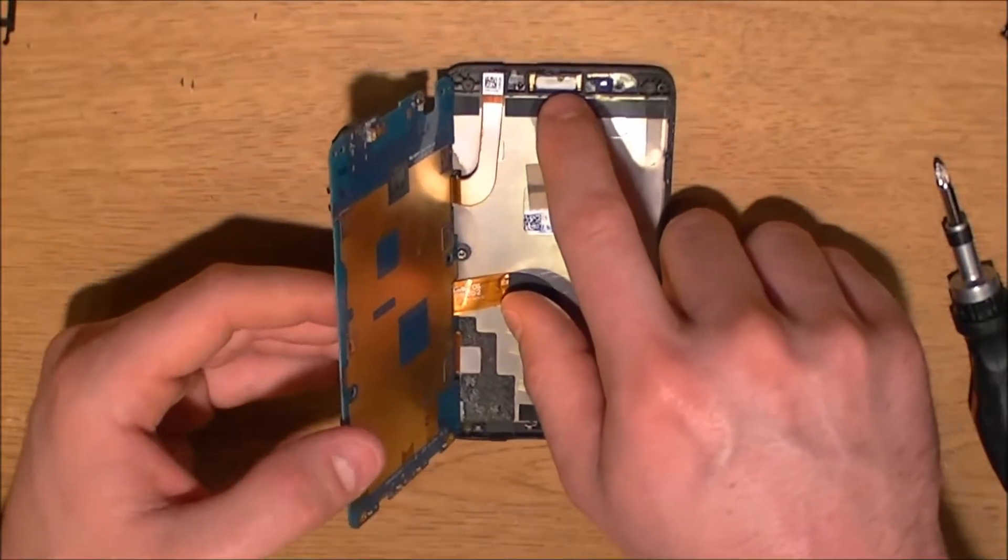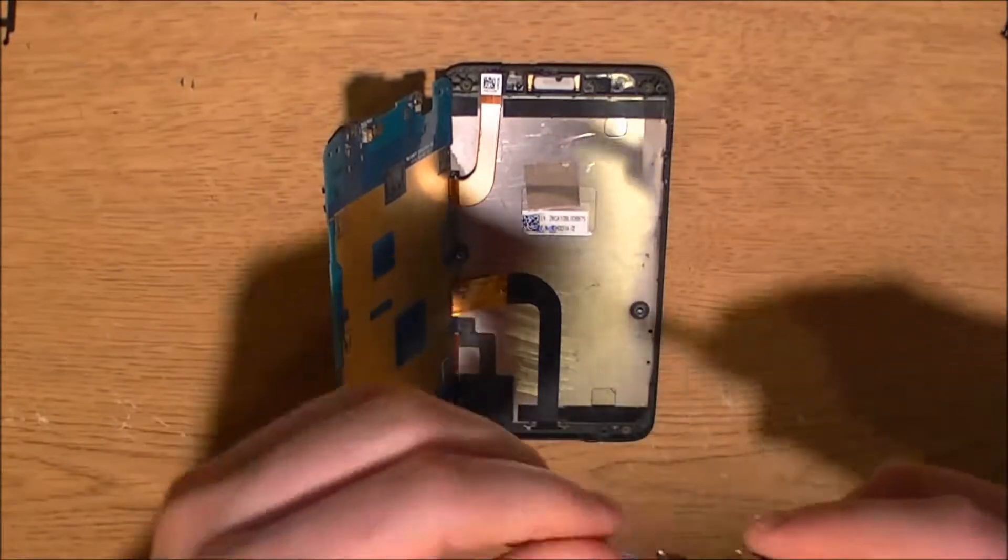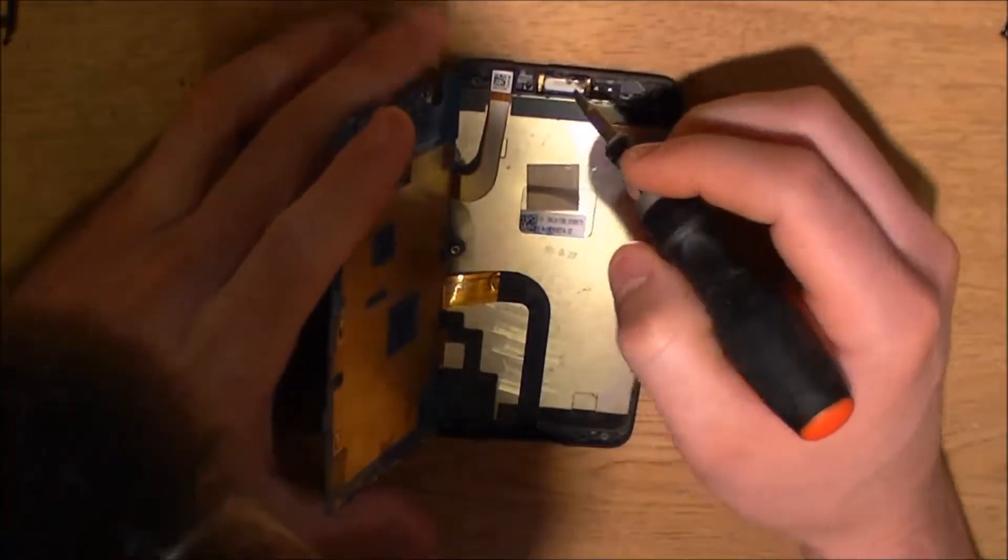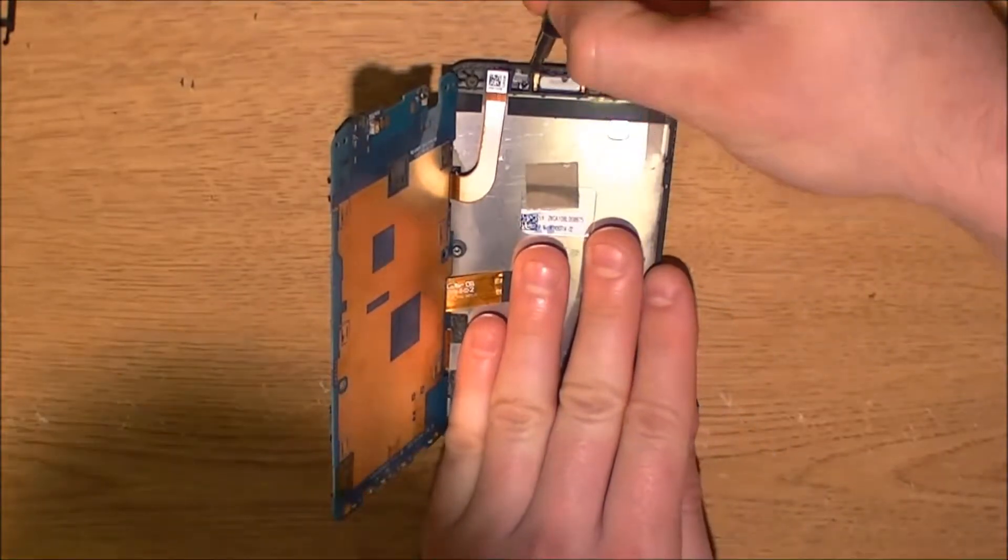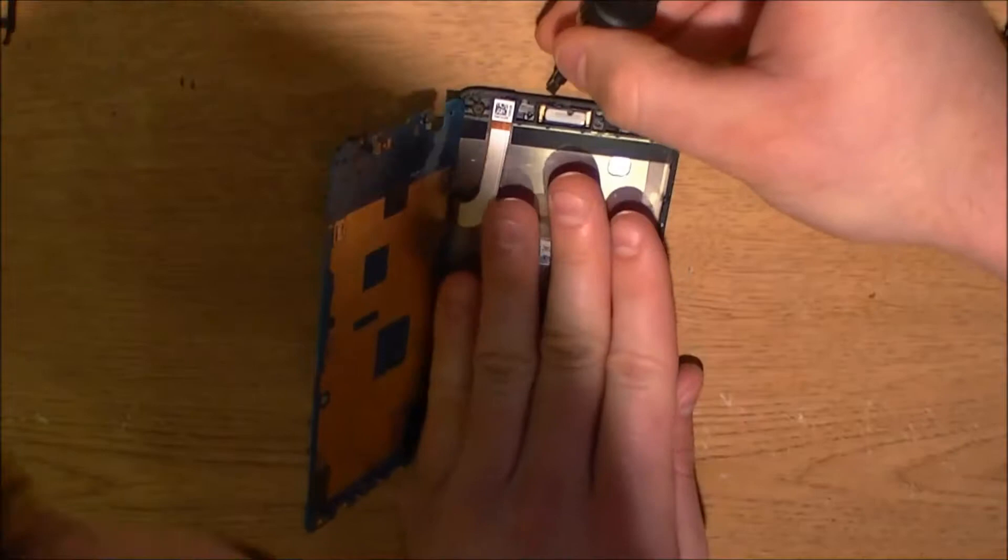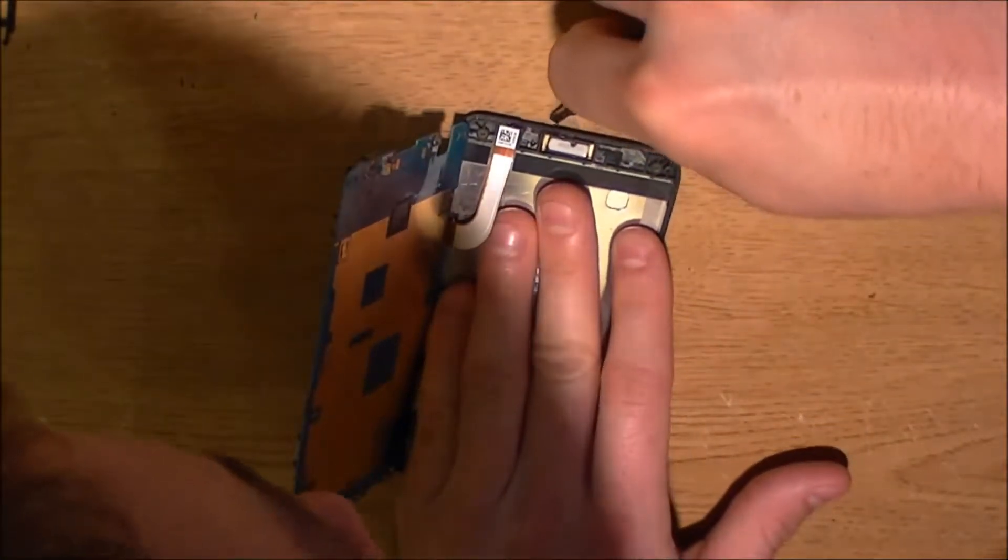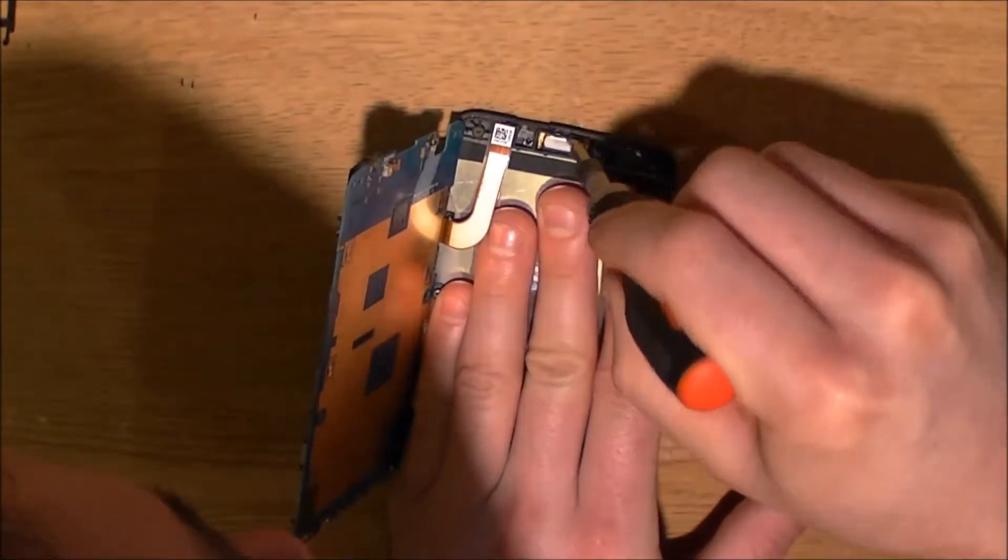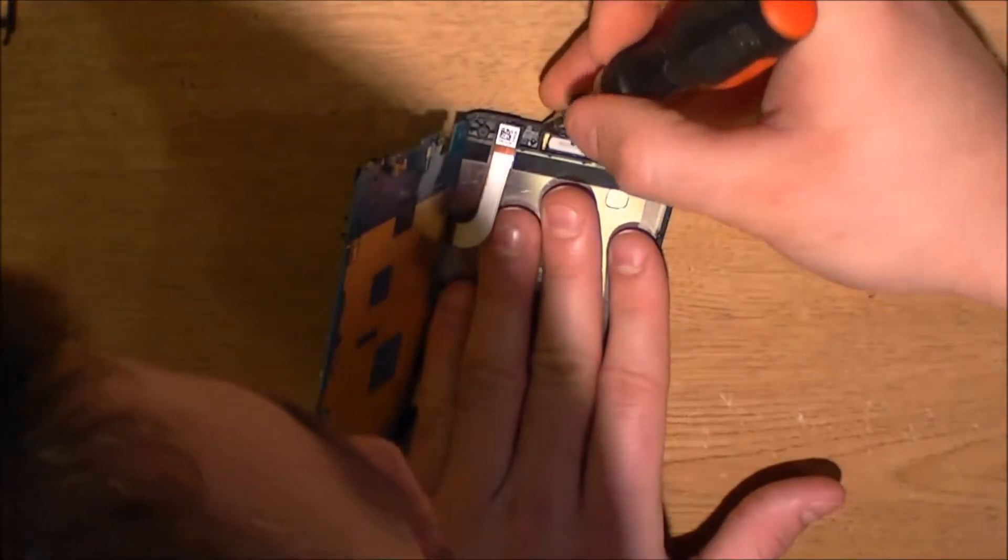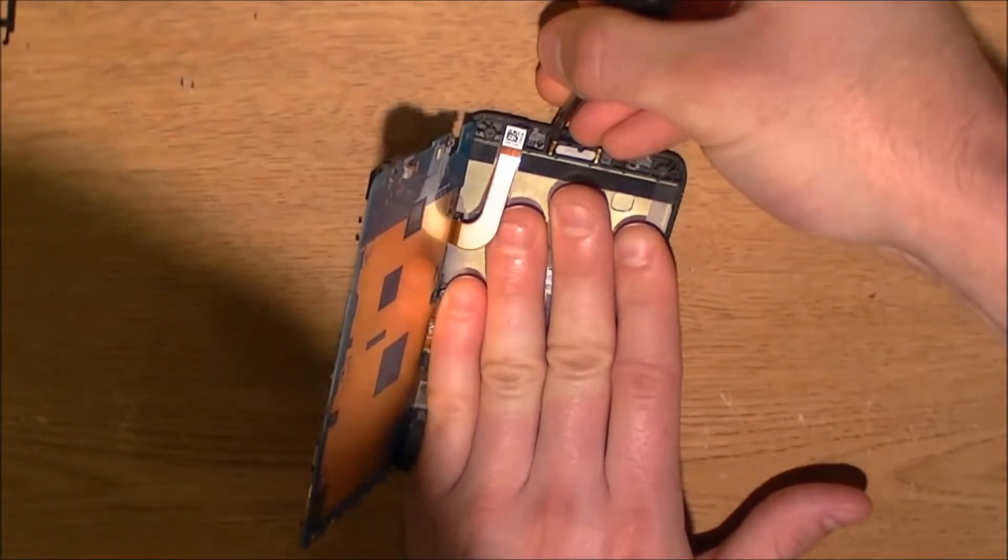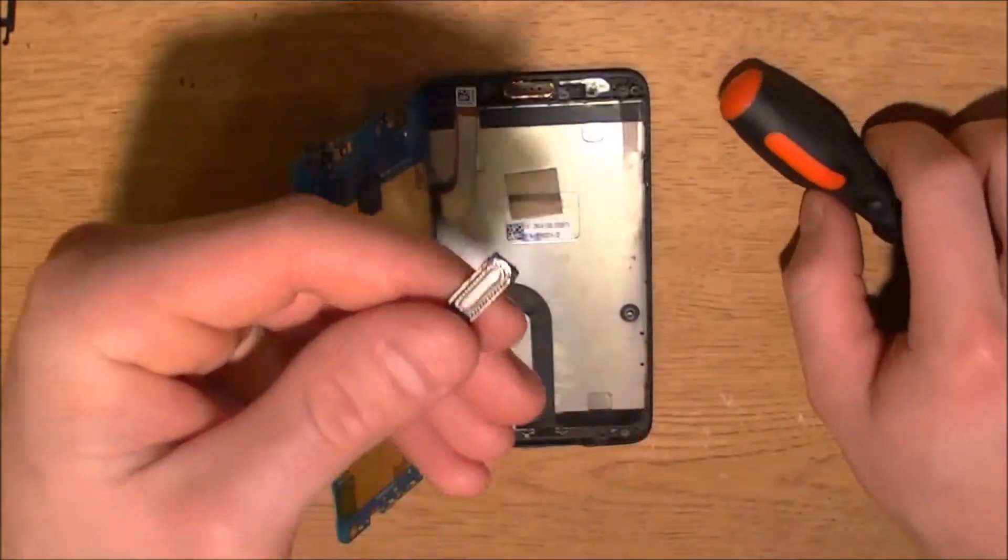Now you see this right here? This is the speaker. We're going to pop it out. I'm going to use a little flathead to pop this one out. There's a little corner right here. And you're just going to lift up on it. It's just got adhesive on it. You just want to pop it out. There's actually a little spot right here. You don't want to break your phone though. There we go. Okay. Now there's that speaker.